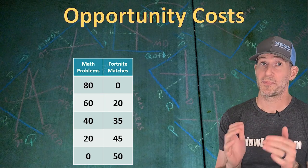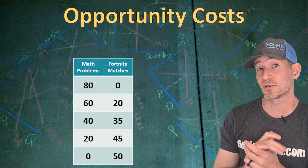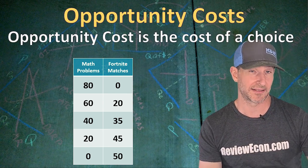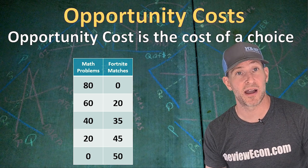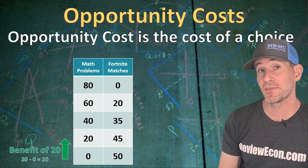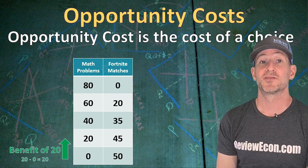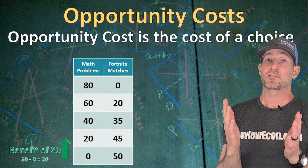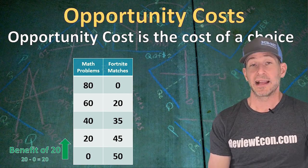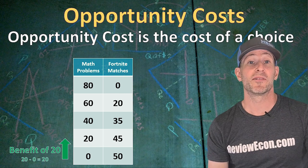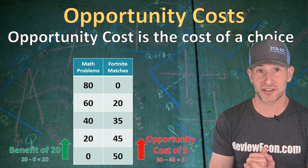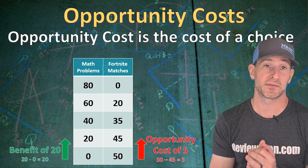We're going to have a future video all about Opportunity Cost, but we see Opportunity Cost in these numbers here. Opportunity Cost is the cost of a choice. On that table, we see the cost of math problems. If I do 20 math problems, I move from zero math problems up to 20 — that's a benefit of 20 math problems. But those math problems aren't free; they come at a cost of Fortnite matches. Since the number of Fortnite matches I can play changes from 50 down to 45, I have an Opportunity Cost of 5 Fortnite matches for the first 20 math problems that I complete.